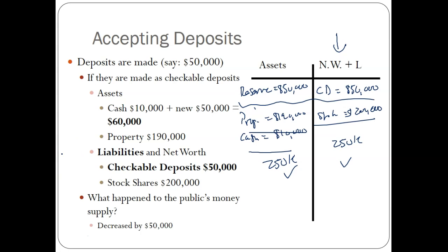Quick question: what happened to the public's money supply? It decreased by $50,000 because that money is no longer directly accessible — they'd have to go to the bank to get it. As more people put money into checkable deposits and savings accounts, that decreases the money supply until loans are made.